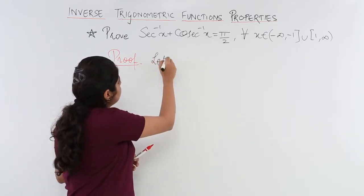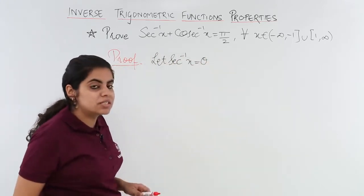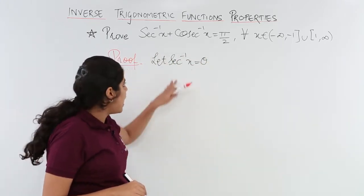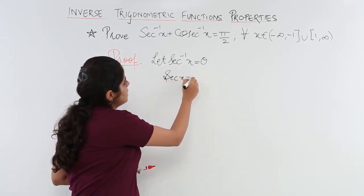Let sec⁻¹x = θ is my first step. Now I have sec⁻¹x = θ, so sec x = θ.